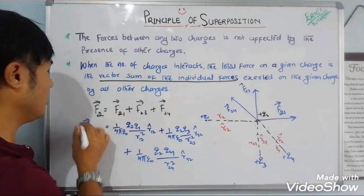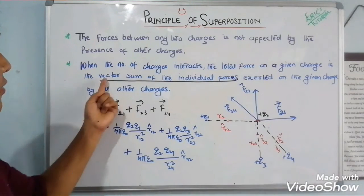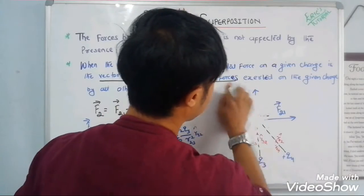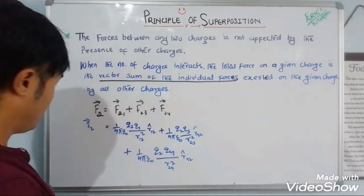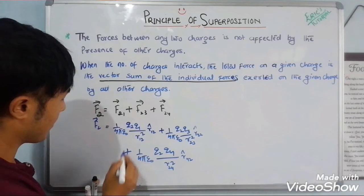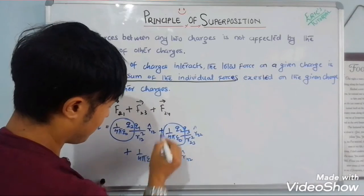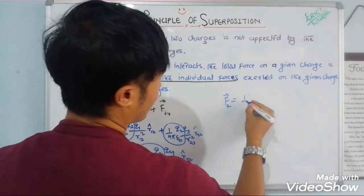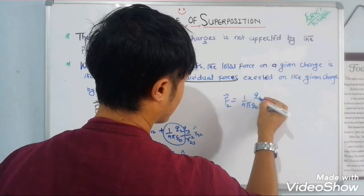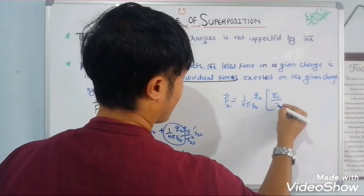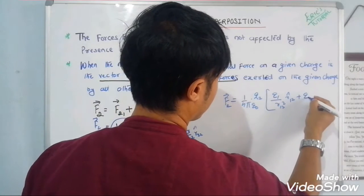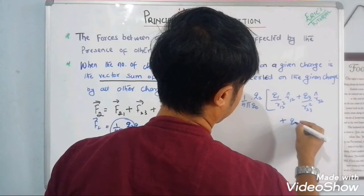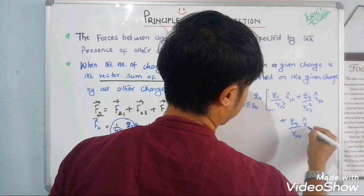This is the Principle of Superposition. We can also simplify by taking the common terms out: F₂ = (1/4πε₀) × q2 × [q1/r₁₂² × r̂₁₂ + q3/r₂₃² × r̂₃₂ + q4/r₂₄² × r̂₄₂]. This is the principle of superposition: the force on a charge is given by the vector sum of individual forces exerted by all other charges.